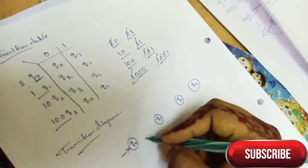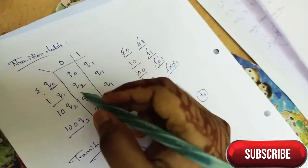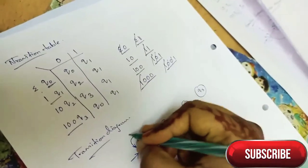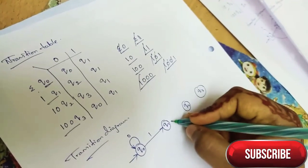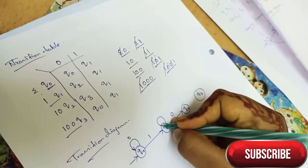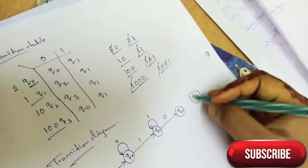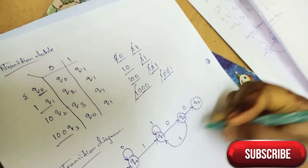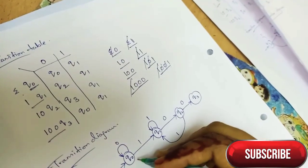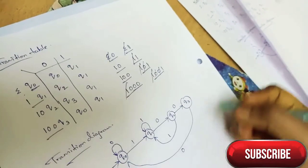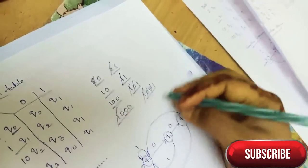Q0 to Q1 is input 1. Q0 self-loop is 0. Q1 to Q2 is 0, and Q1 has a self-loop. Q2 to Q1 is input 1. Then Q3 to Q0 is 0, and Q3 to Q1 is 1.